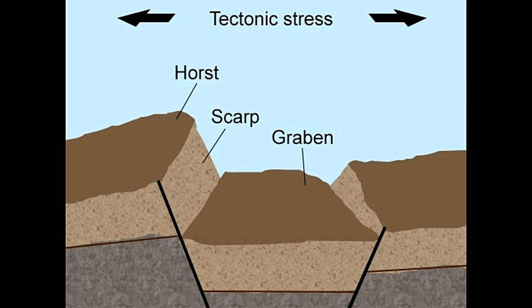The mountains formed in this fashion are known as Fault Block Mountains. Geologically, the rise is known as a Horst, whereas the corresponding depression is known as a Graben. This near-textbook formation can be seen in the basin of the River Narmada in central India, which is a Graben between the two horsts of the Satpura mountain range in the south and the Vindhya mountain range in the north.